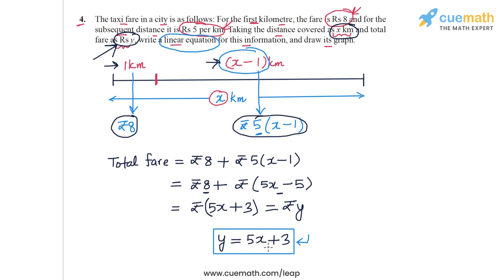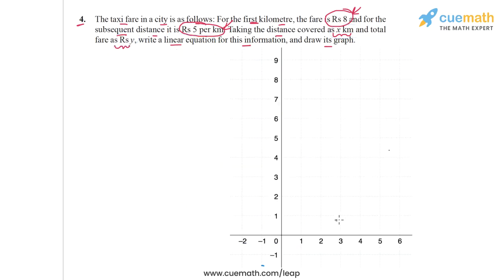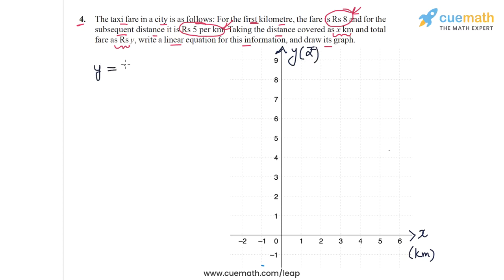Now we have to draw the graph of y equals 5x plus 3. The horizontal axis represents x, the distance in kilometers, and the vertical axis represents y, the fare in rupees. We need to find two solutions of this equation, plot those two points, and draw the line through them.